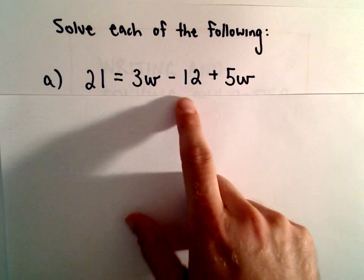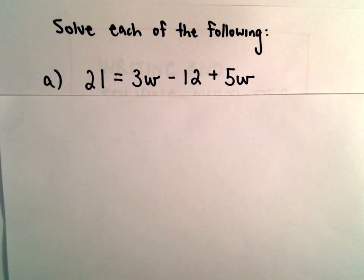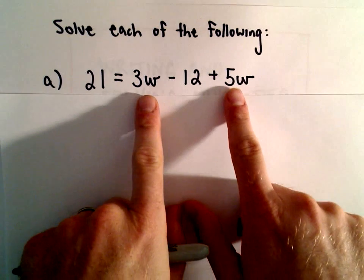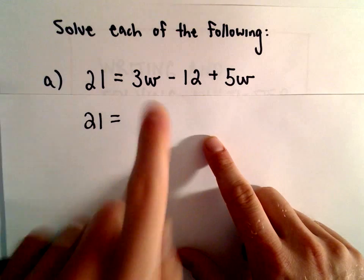So Part A here we have 21 equals 3W minus 12 plus 5W. The first thing I'm going to do is I see that we have like terms on the right side of my equation. The 21 I'll just drop that down.